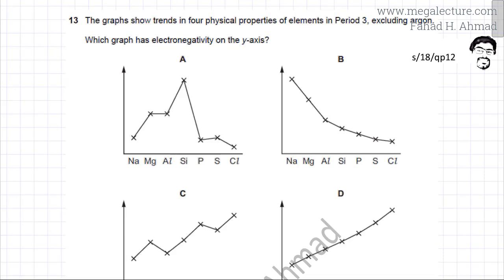The following question reads that the graph shows trends in four physical properties of elements in period 3, including argon. Which graph has electronegativity on the y-axis?